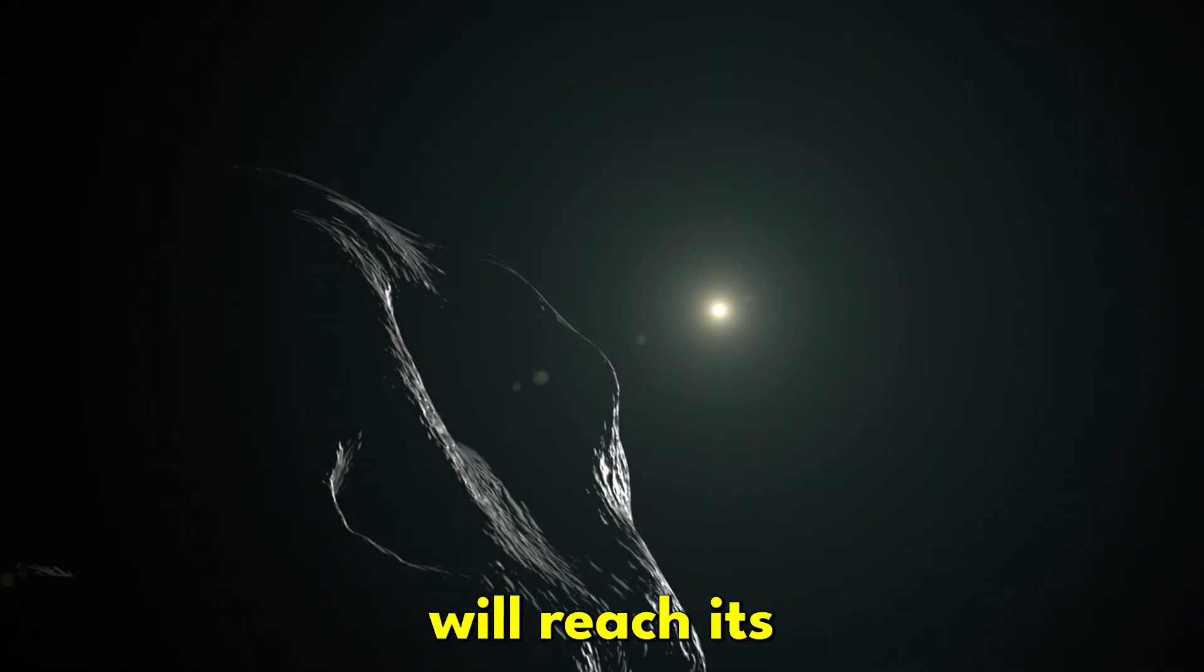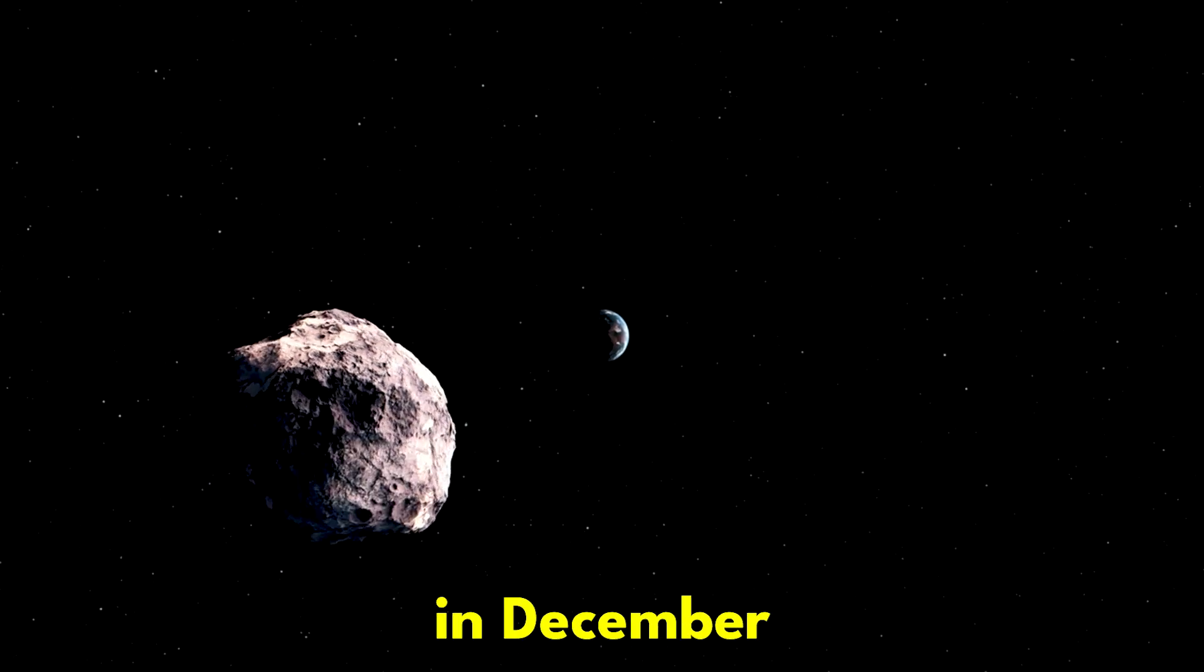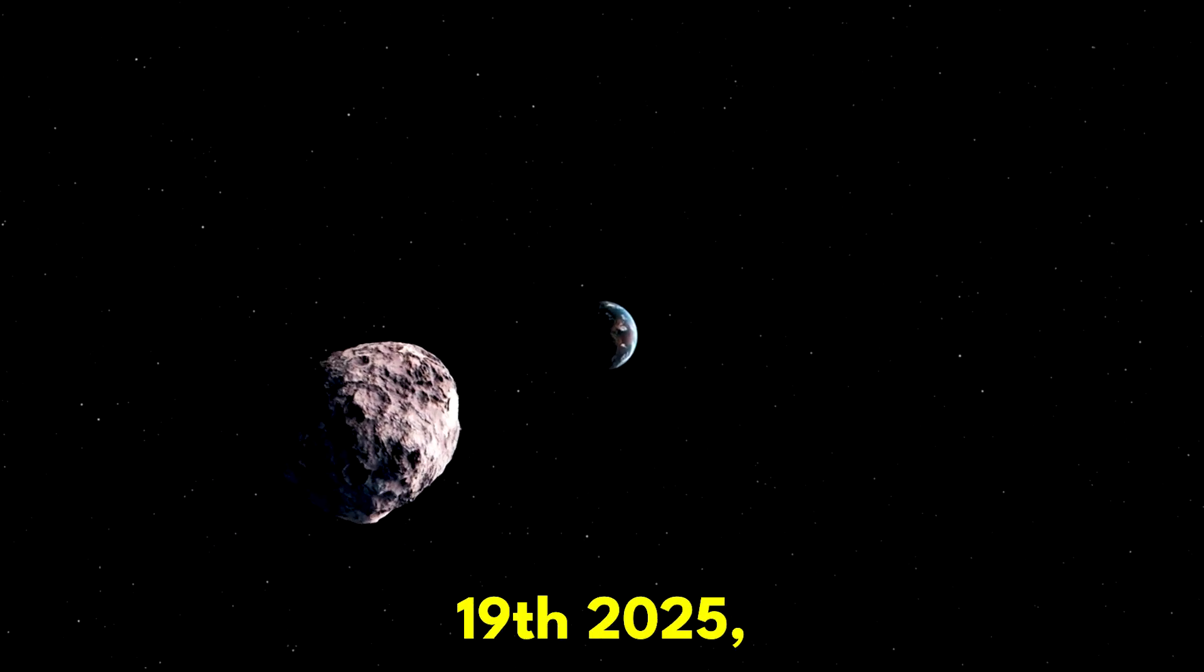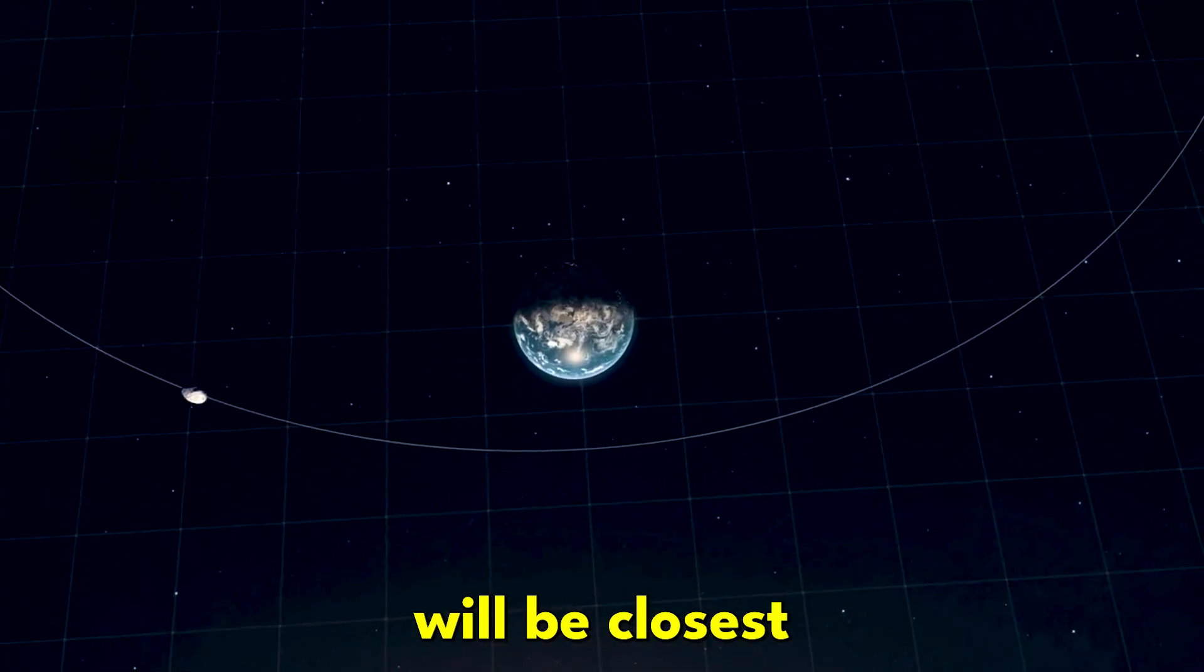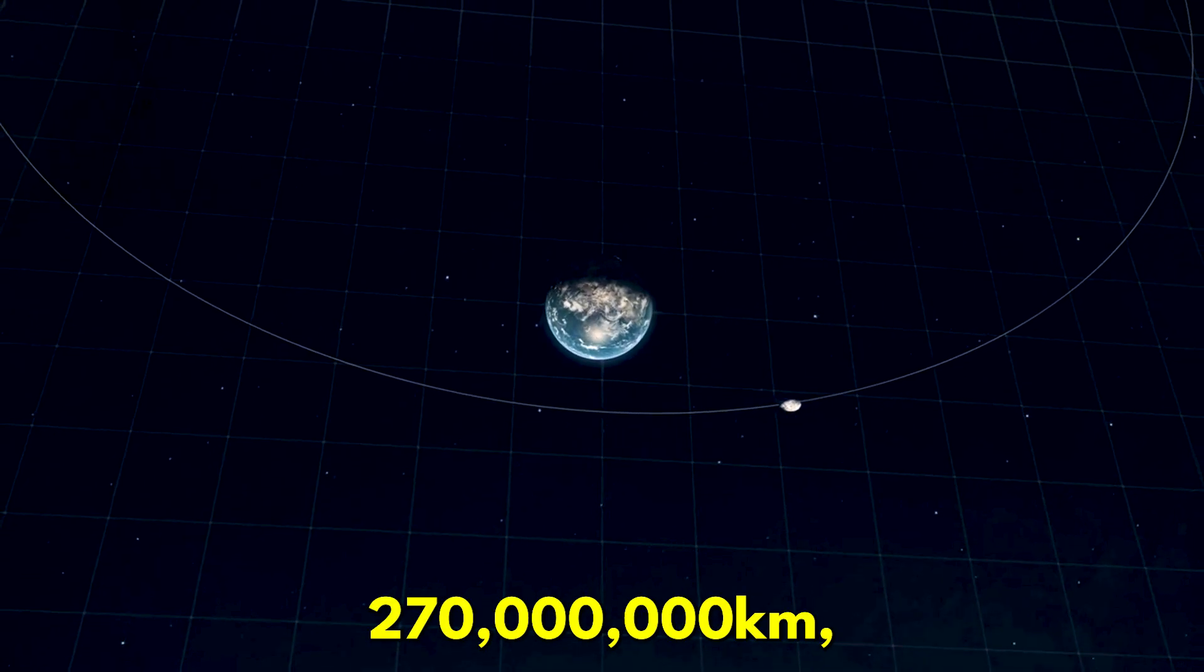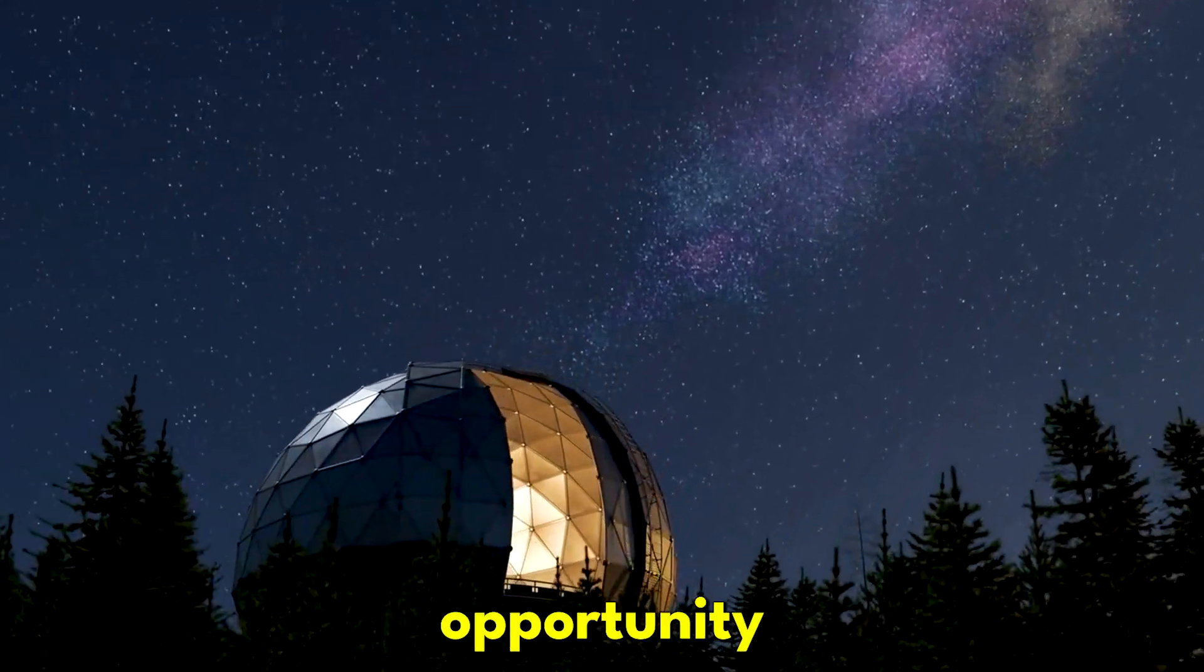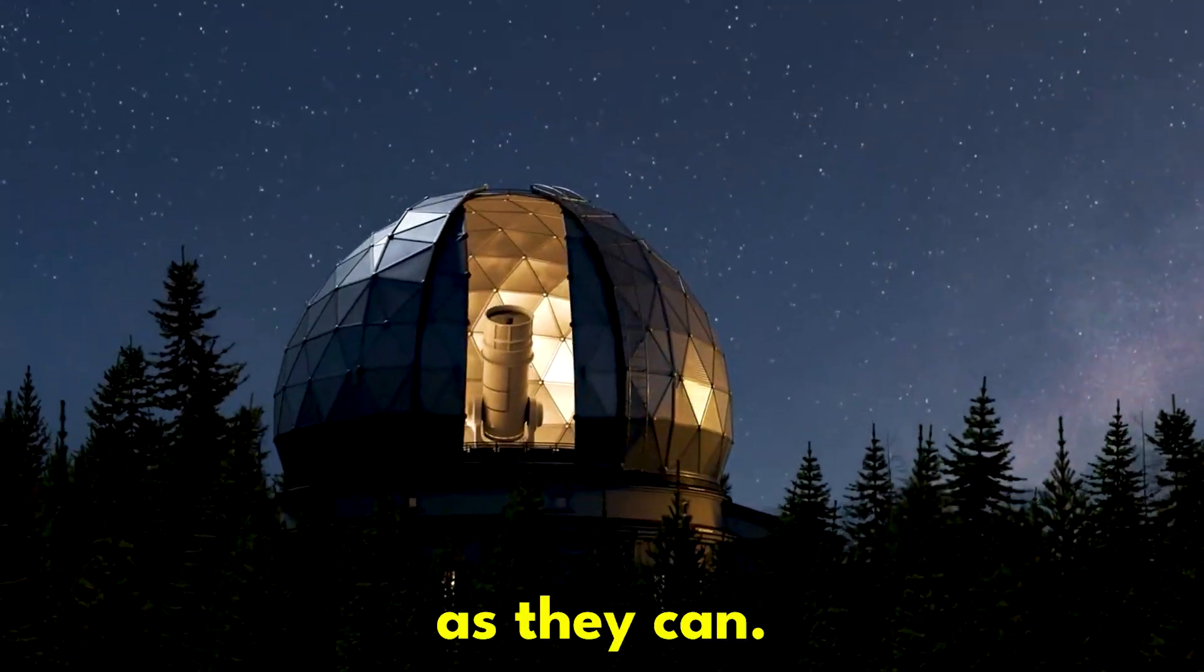Then the comet will reach its closest approach to Sun on October 30, 2025. Then, a few weeks later, in December 19, 2025, this object will be closest to Earth at a safe distance of 270 million kilometers, giving astronomers one last opportunity to gather as much data as they can.